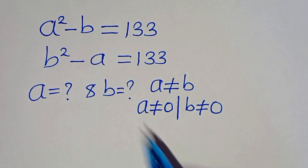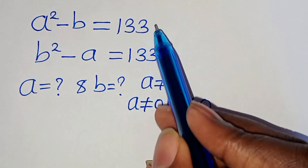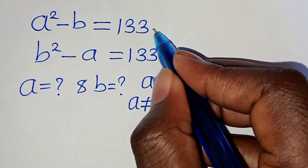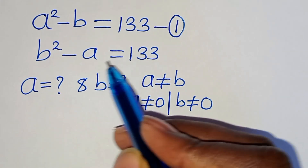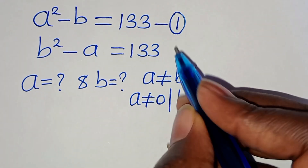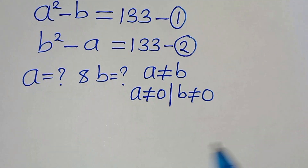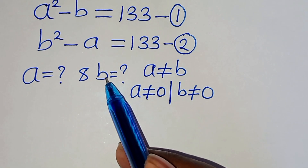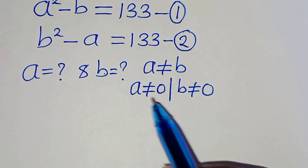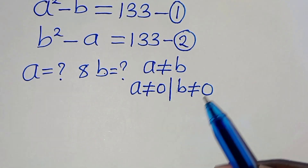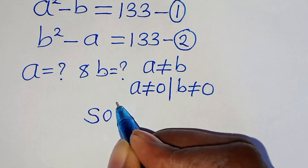You are welcome to solve this nice algebra problem, which is a squared minus b equals 1.33 — let's call this equation 1. And b squared minus a equals 1.33 — let's call this equation 2. So what is the value of a and what is the value of b, given that a is not equal to b, a is not equal to 0, and b is not equal to 0? So let's provide the solution.